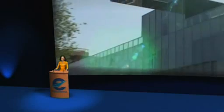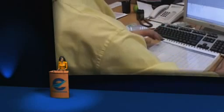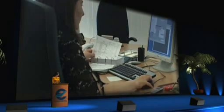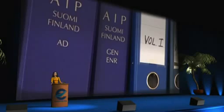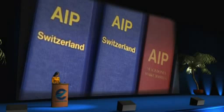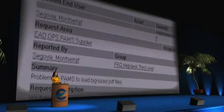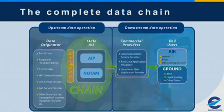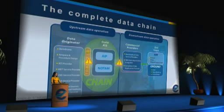The European AIS database, the EAD, was launched in 2003. Centralised information has improved data integrity and significantly simplified the data chain. However, the EAD does not cover processes taking place before the state AIS — the so-called upstream data operations. This is the purpose of the chain activity: to address the whole data chain and ensure that quality data reaches the required level of integrity.